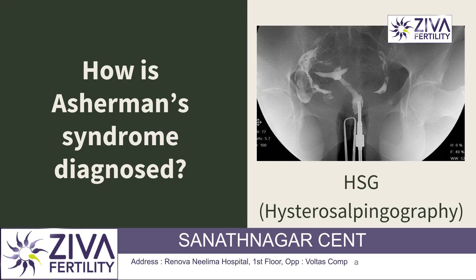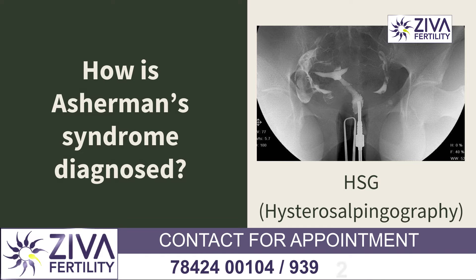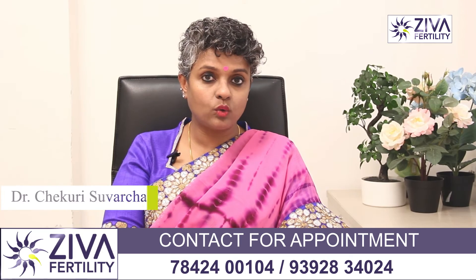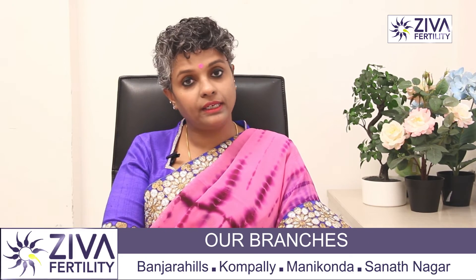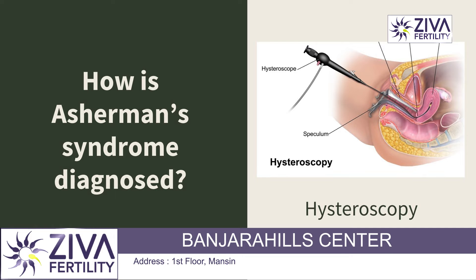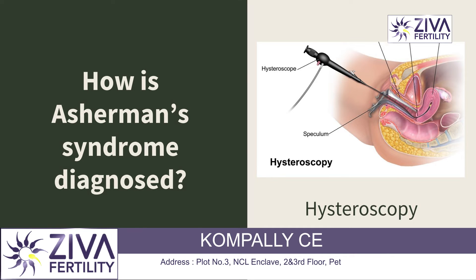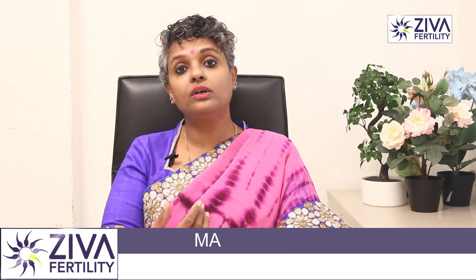The second is an HSG — hysterosalpingogram — where a special dye is passed into the uterus, and if the tubes are open, the dye comes out of both ends of the tubes so the tubes and the uterus can be assessed for any adhesions. The third and best method is hysteroscopy, where a camera is passed into the uterus and examined for any adhesions. If present, it can be converted into an operative hysteroscopy where the adhesions are also removed.